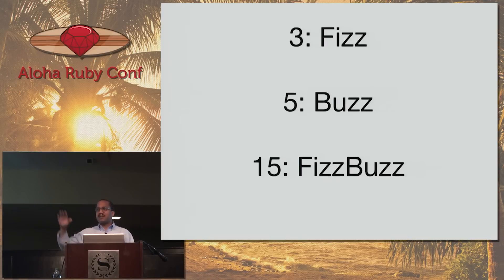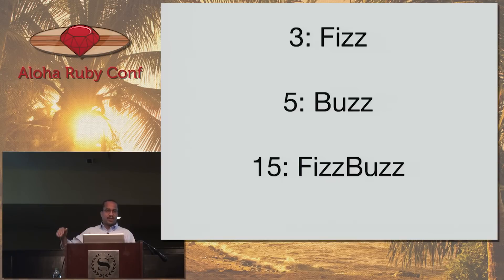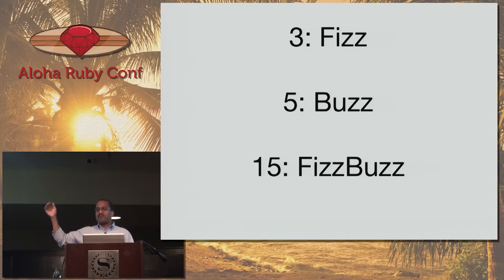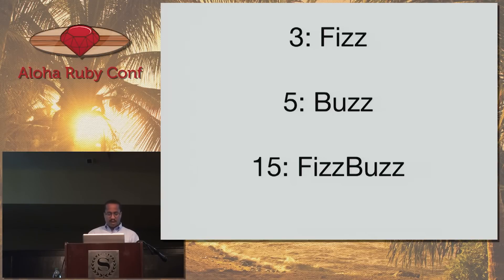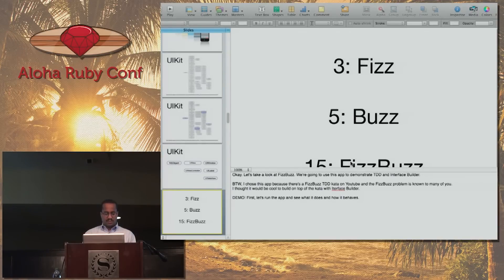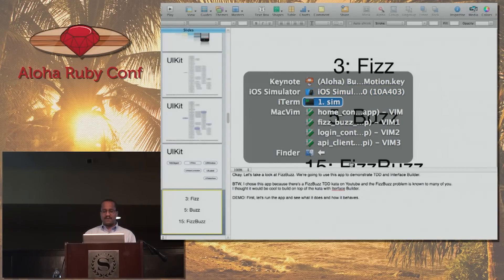How many of you are familiar with FizzBuzz? Maybe you've done this in a technical interview? You write a block of code that counts integers from one to a hundred — when you hit an integer that's a multiple of three, print Fizz; a multiple of five, print Buzz; a multiple of fifteen, print FizzBuzz. For our next demonstration, we are going to look at a FizzBuzz app.